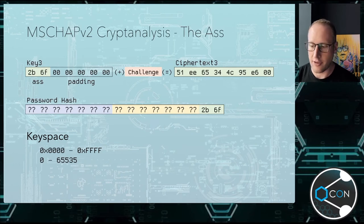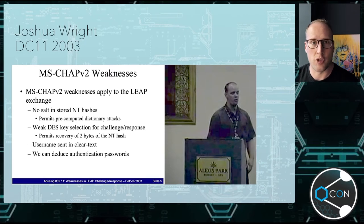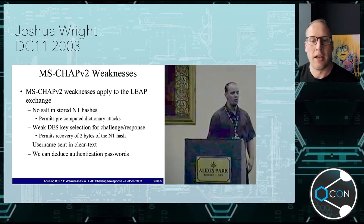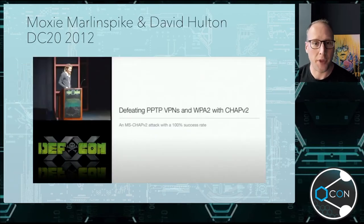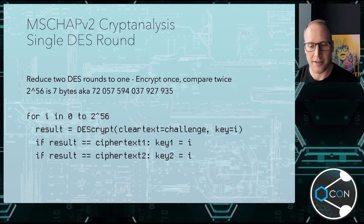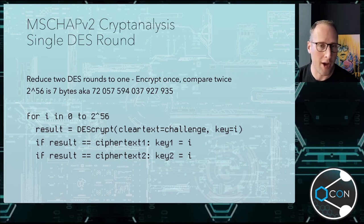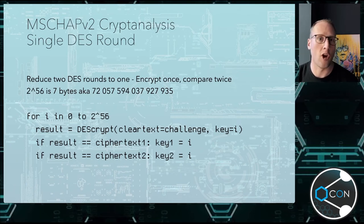That's not a new observation - this is a slide from Joshua Wright's deck at DEF CON 11 at Alexis Park in 2003. He's got 'weak DES key selection permits recovery of two bytes of the NT hash' - so we've known this for a long time. Later on, when Moxie Marlinspike, Spike, and David Hulton at DC20 in 2012 presented their work, they used this but took it one step further: instead of going through the DES key space twice brute-forcing the two keys, they go through the DES key space once because they do one cryptographic operation and two compare operations. That was another optimization they came up with in 2012.